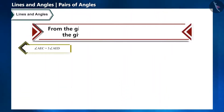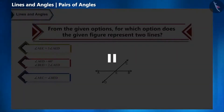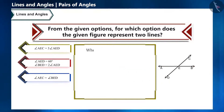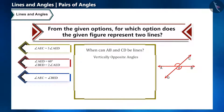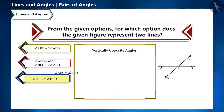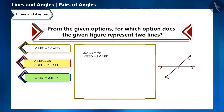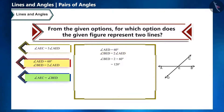Question: for which option does the figure represent two lines? AE and CD can be lines when opposite angles are vertically opposite angles. The third option directly states that opposite angles AEC and BED are vertically opposite angles — so that is correct. In the second option, angle BED is twice angle AED, giving 120 degrees, and their sum is 180 degrees, showing AB is a line and ED is a ray. The first option cannot ensure that AB and CD are lines.